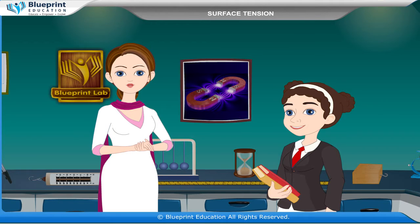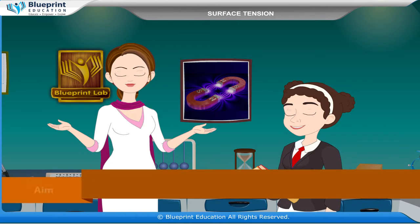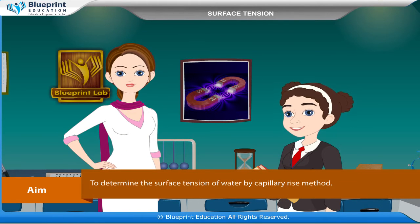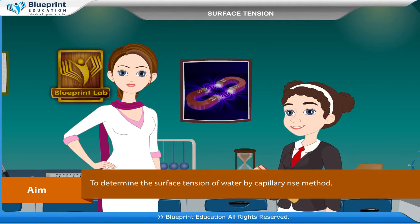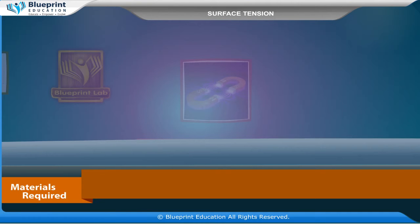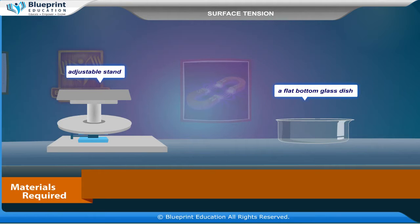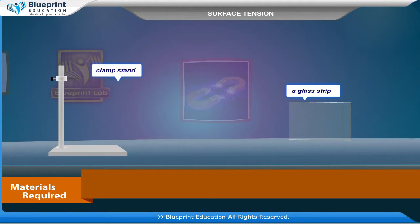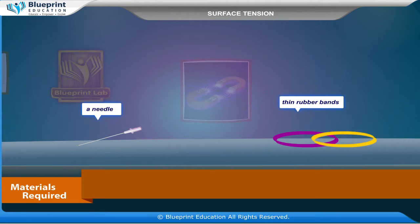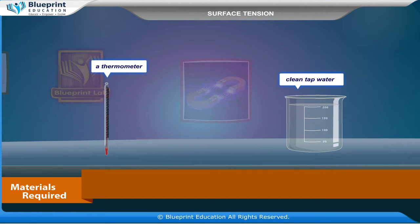Let's do an experiment to determine the surface tension of water by capillary rise method. The materials required are 3 glass capillary tubes of different diameters, a travelling microscope, an adjustable stand, a flat bottom glass dish, a clamp stand, a glass strip, a needle, thin rubber bands, a thermometer, and clean tap water whose surface tension is to be determined.